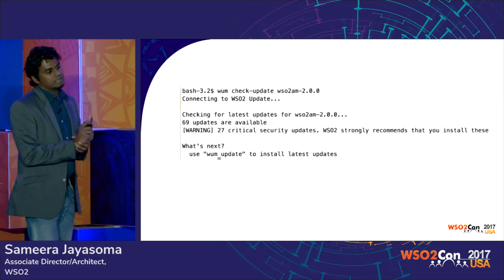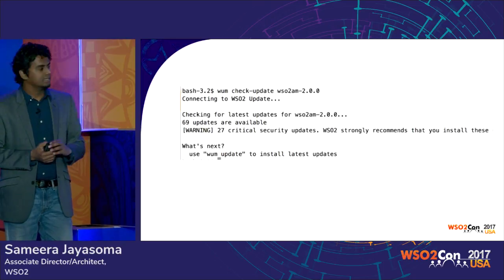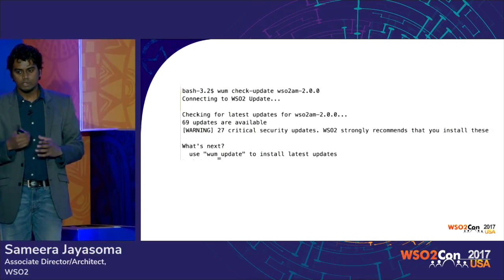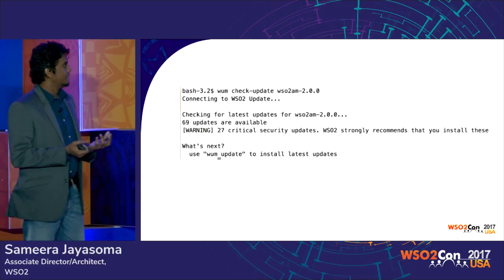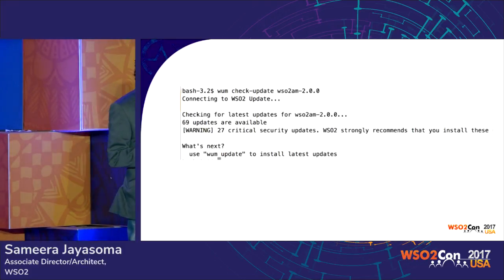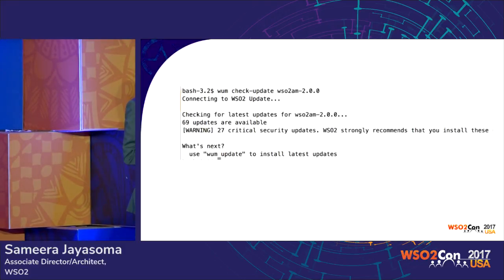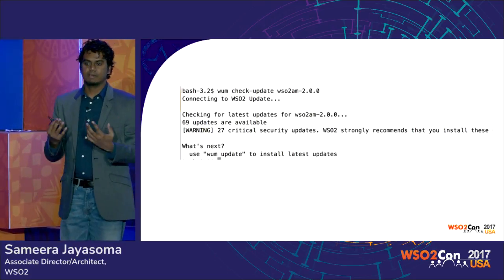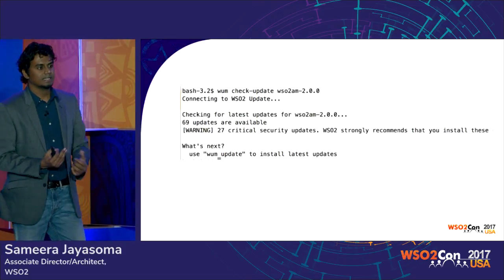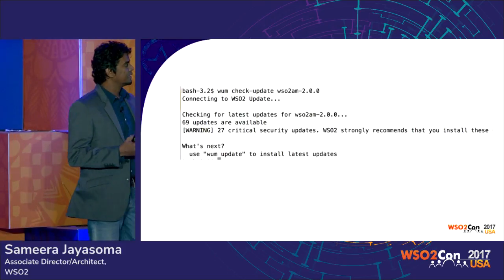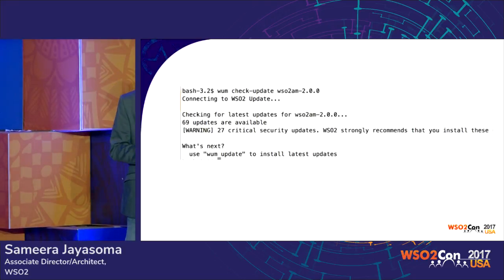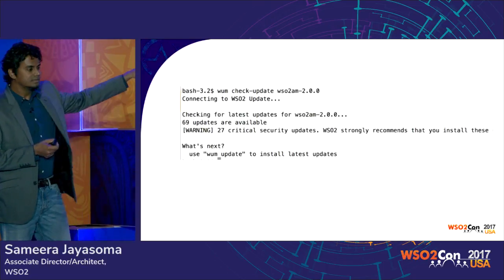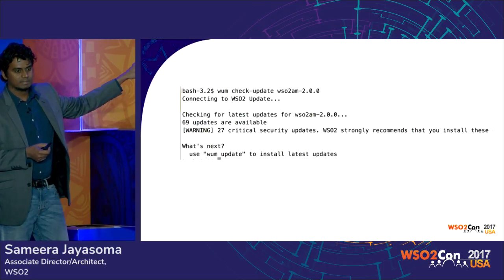Once WAM knows the products you want to update, you can check for updates using the check command. For example, checking API Manager 2.0.0 — a sample output might show 69 updates available, 27 of which are critical security updates. Whenever there are critical security updates, we strongly recommend installing them immediately.